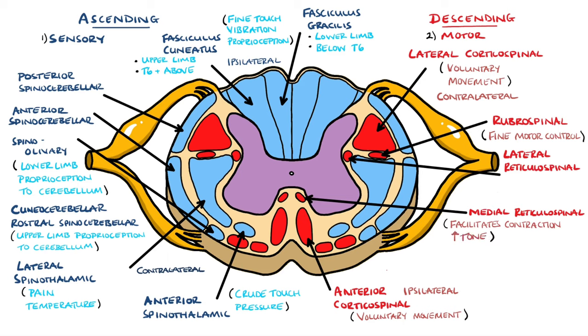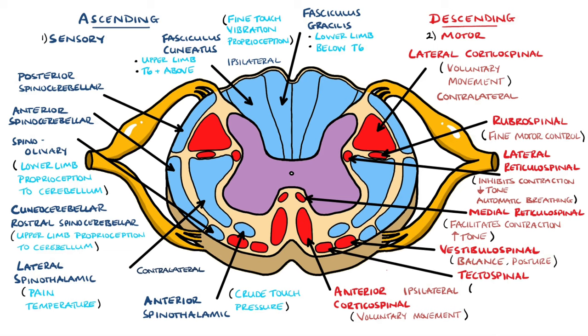...as well as the lateral reticulospinal tract, which inhibits voluntary movement, reduces muscle tone, and plays a role in automatic breathing. Next is the vestibulospinal tract, which helps control balance and posture. And the fourth tract is the tectospinal tract, which is involved in the coordination of head movements with vision.